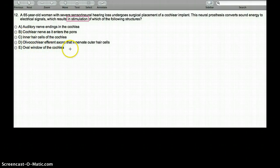Olivocochlear efferent axons that innervate the outer hair cells? This does not even make sense. Oval window of the cochlea? No, it bypasses the oval window, goes straight to the cochlea.